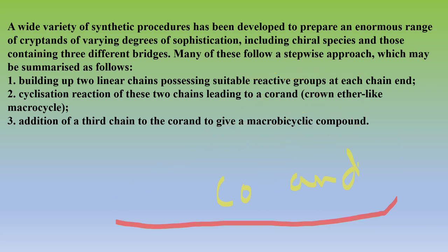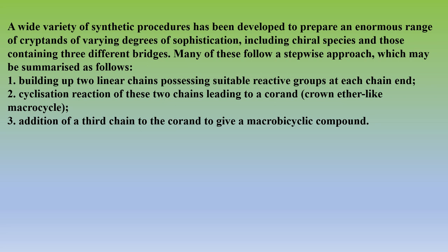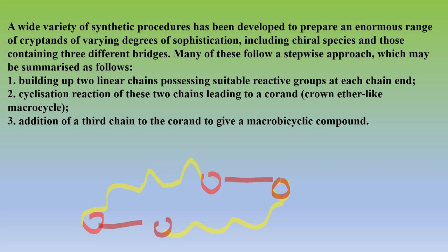After adding the third linear chain to the corand, the product is called a cryptand. To summarize: two linear chains each with two reactive sites react to form a corand, then a third linear chain is added to yield the macro bicyclic cryptand structure.